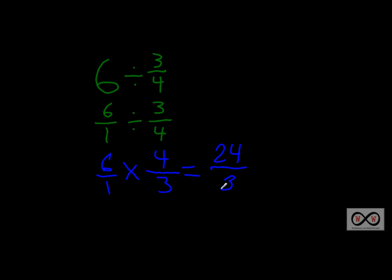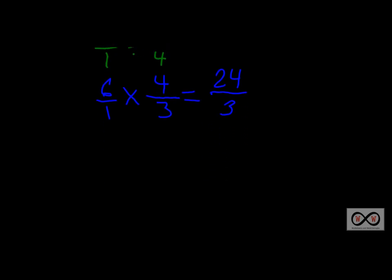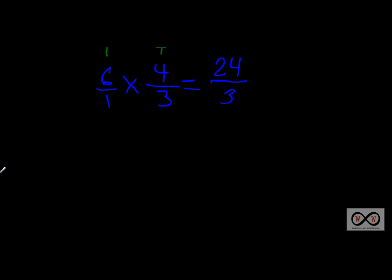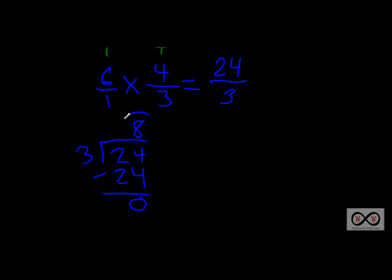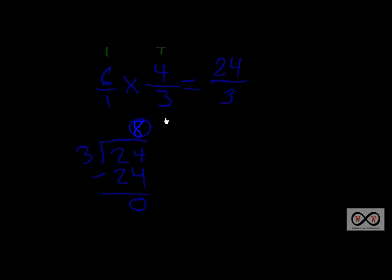How many days is twenty-four thirds? We need to convert that improper fraction to a whole number or mixed number. We look at 24/3 as a division problem: 24 divided by three. Three goes into 24 eight times — eight times three is 24, subtract to get zero. So once again we get eight days — it would take her eight days to use up six bags of mangoes.